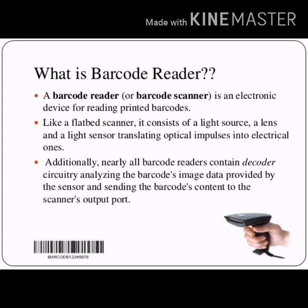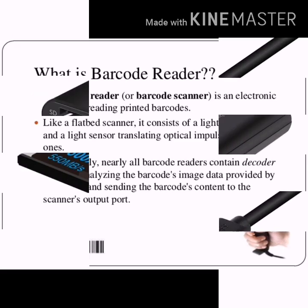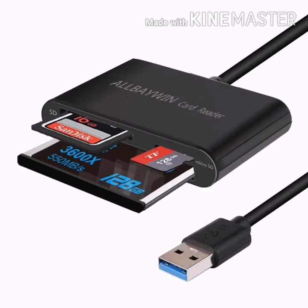A barcode reader is a kind of optical scanner consisting of a light source, a lens, and a photo conductor. It reads the data code available on various products in the form of dark lines called barcodes.